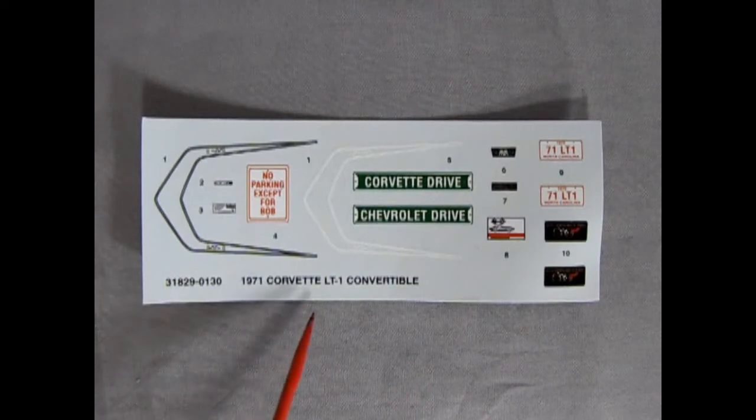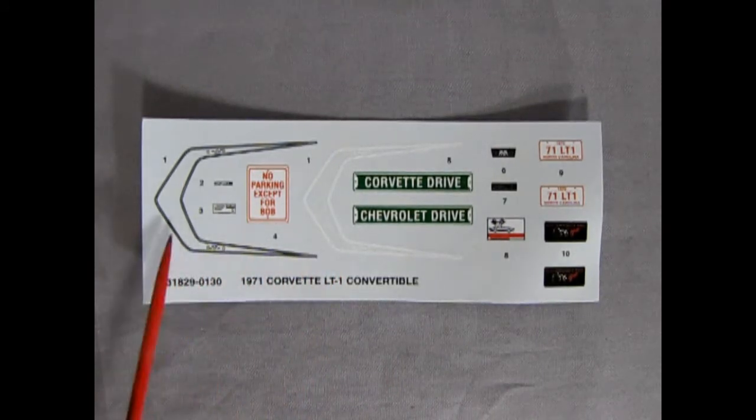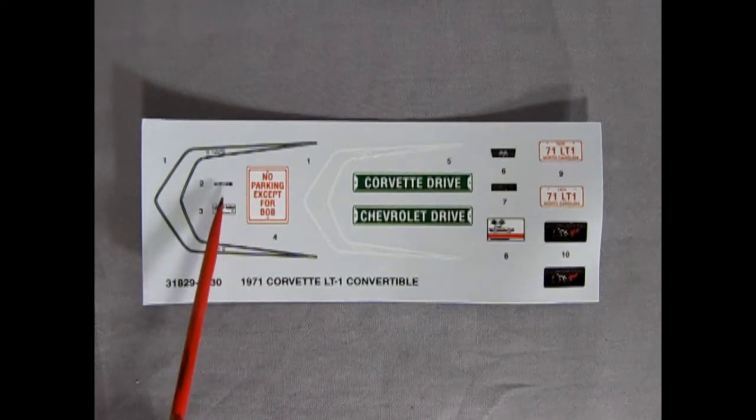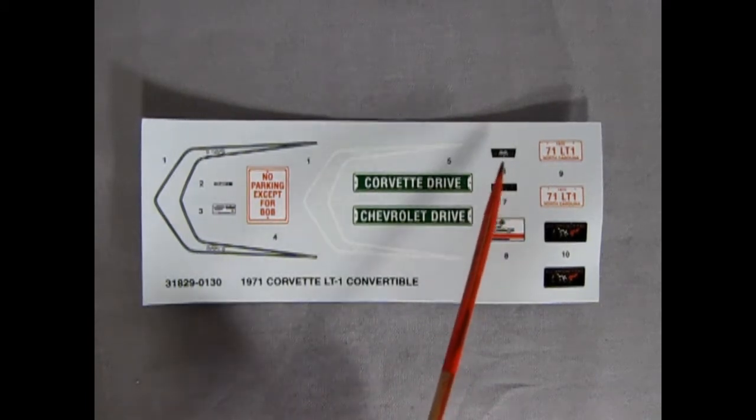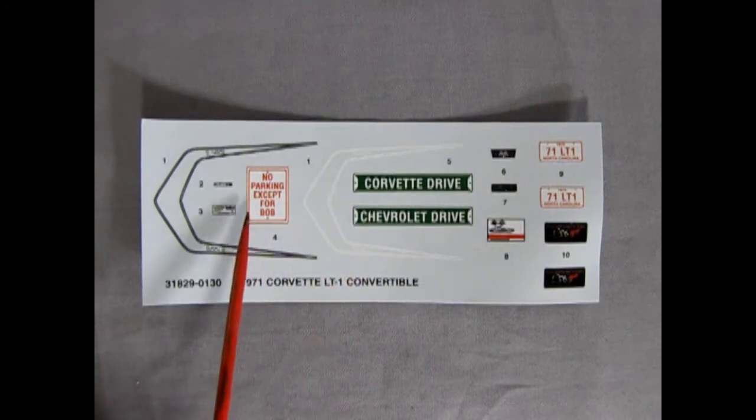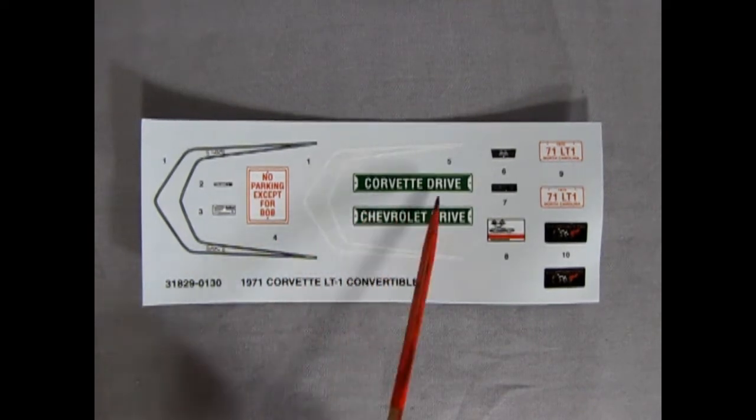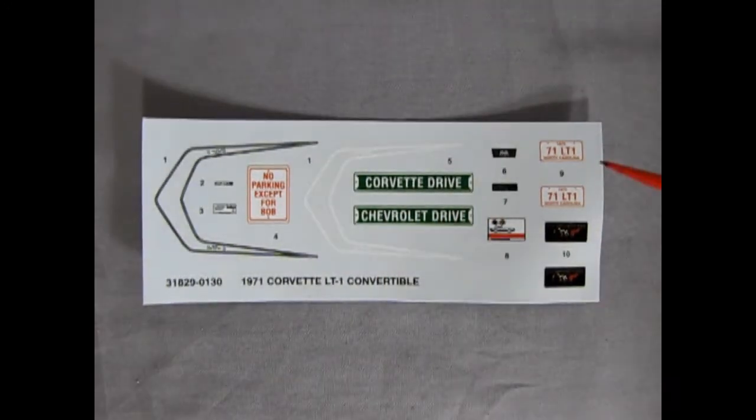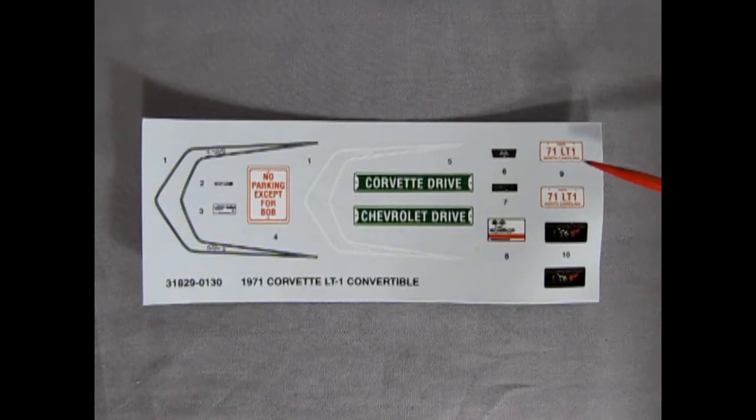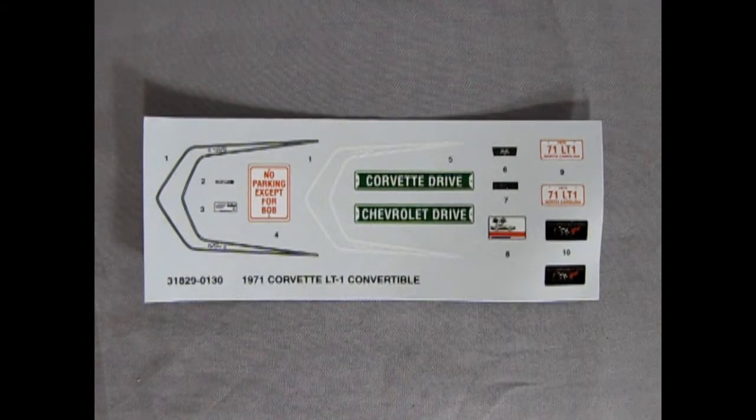Here we have our decal sheet for the 1971 Corvette LT1 convertible. And as you can see, you get a choice of two different LT1 stripes, black and white. You get all these nice little decals under here for things like the fan shroud, the battery. There's the owner's manual, the radio, I believe, or gauges. Kind of hard for me to see from this angle. There's our signs, no parking except for Bob, which was sort of a funny joke back in the day. Like the 90s, early 2000s. There's the Corvette Drive and Chevrolet Drive signs. Making your own street signs using that evergreen styrene sheet. And here you can see 1971 LT1. These are North Carolina plates. And our 50th anniversary of Corvette plates over here. Overall, a nice decal sheet. Easy to apply with a little bit of water.